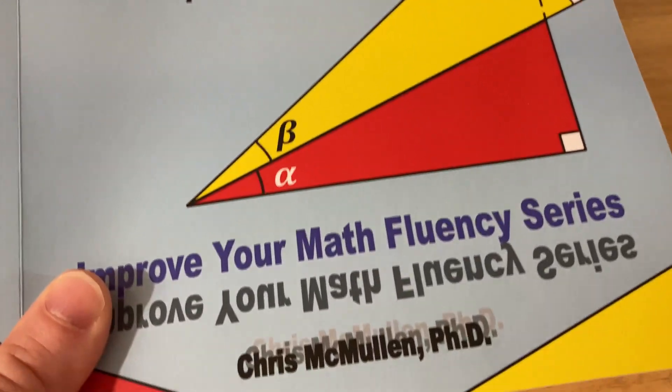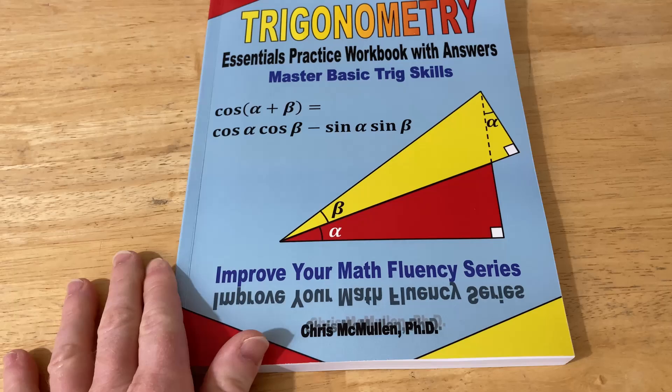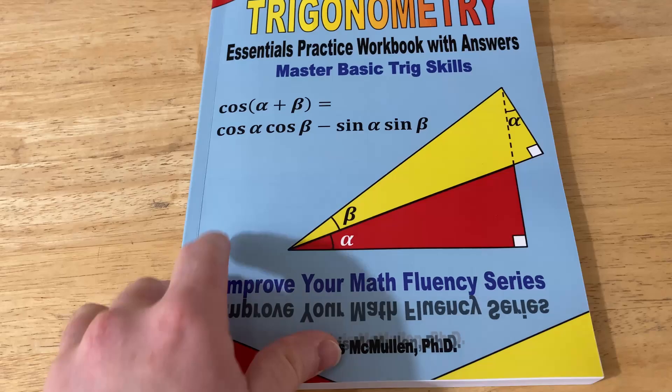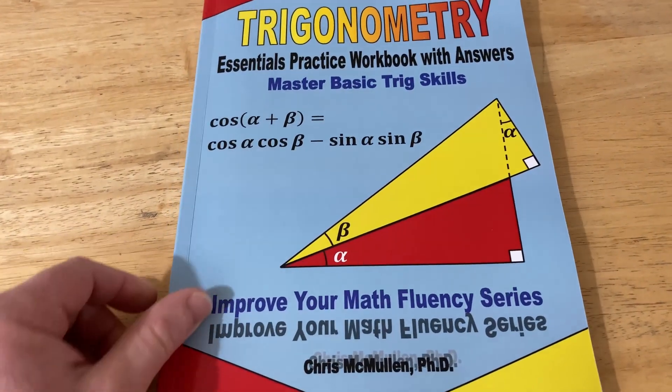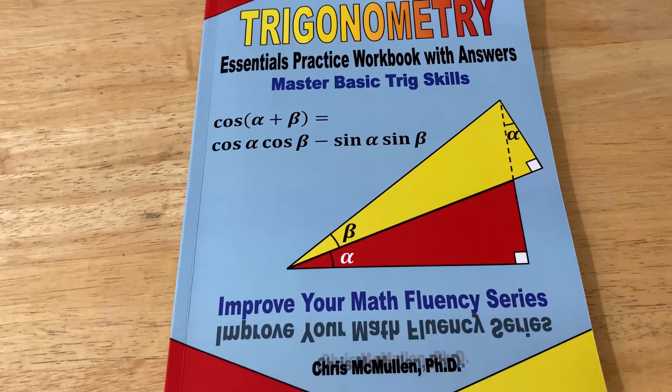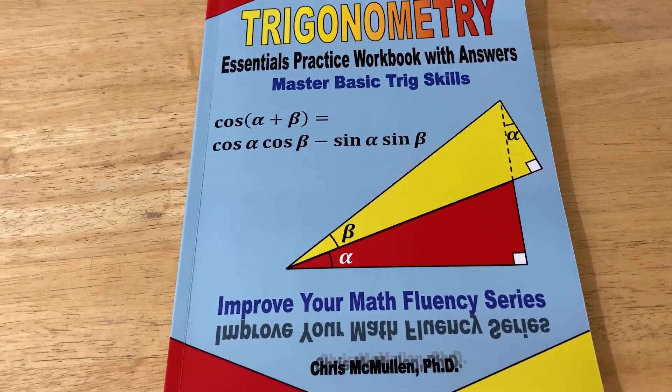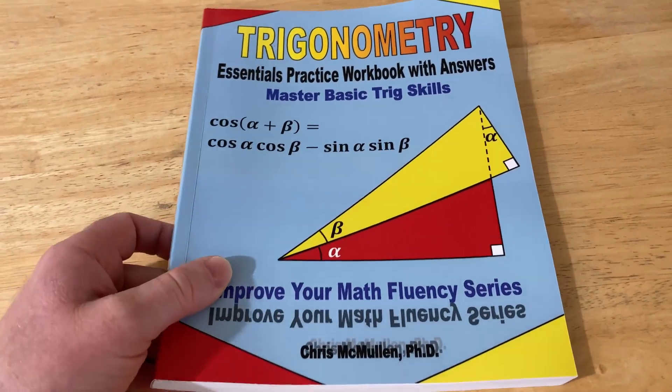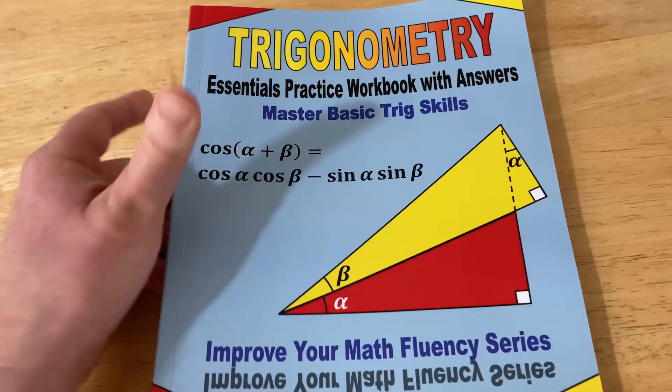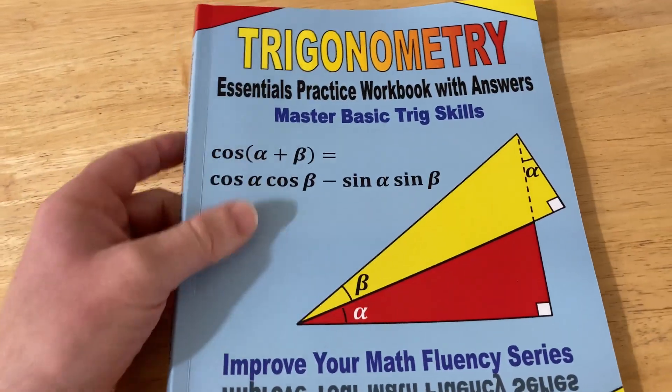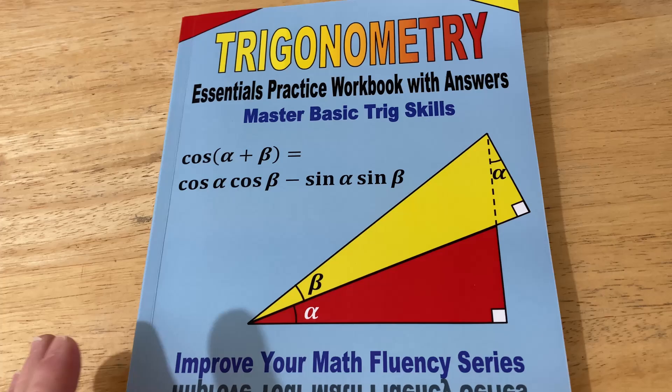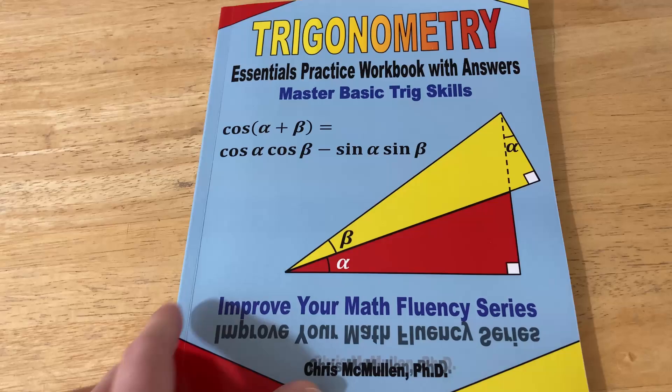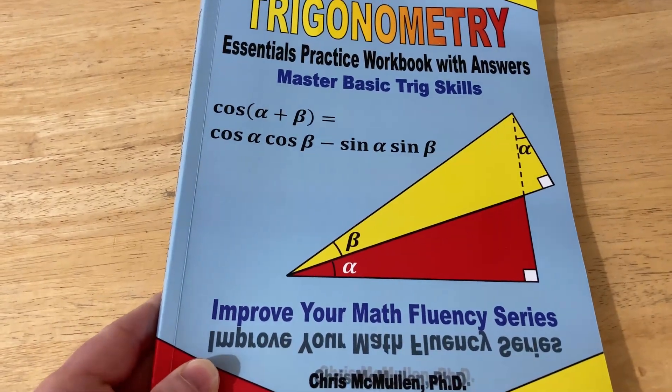The book is called Trigonometry, Essentials Practice Workbook with Answers, and it's written by Chris McMullen. So first let me say that Chris has written other books on math and on physics. I have his book on basic algebra, which has just some specific topics in basic algebra. I also have his book on single variable calculus, and he has a book on multivariable calculus.